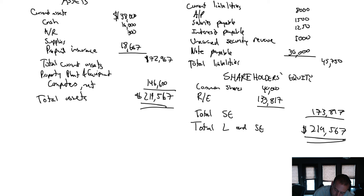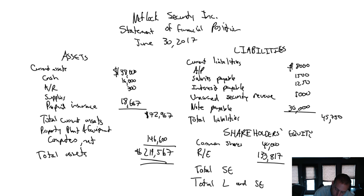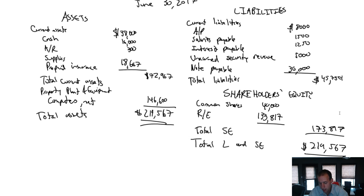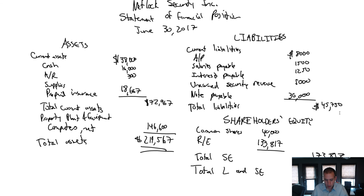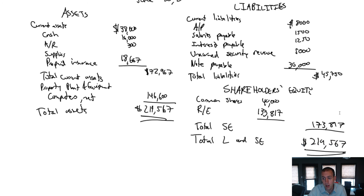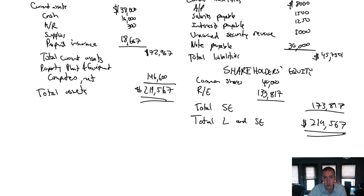Assets equals liabilities plus shareholders' equity. We're satisfied — our balance sheet is balanced and complete. In the next video we're going to learn how to prepare a closing entry. Stay tuned for the next one.